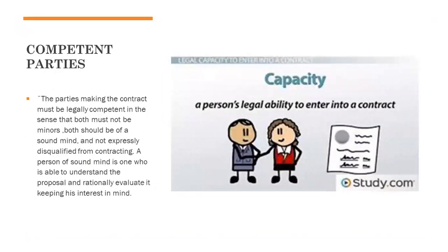What are competent parties? Competent parties are persons who must be legally competent to be part of the business. He should not be a minor, should be of a sound mind, and not expressly disqualified from contracting. A person of sound mind is one who is able to understand the proposal and rationally evaluate it keeping his interests in mind. If the partners are not of a sound mind, they cannot take a correct decision and the other person can take advantage of it. In India, minors don't have much authority; so if a minor is a partner, a major has to have the power of attorney to attest it.